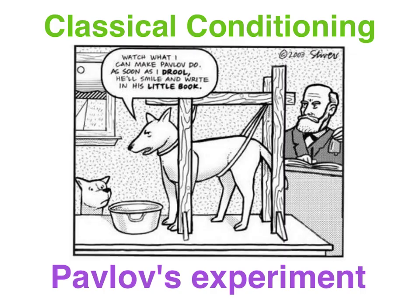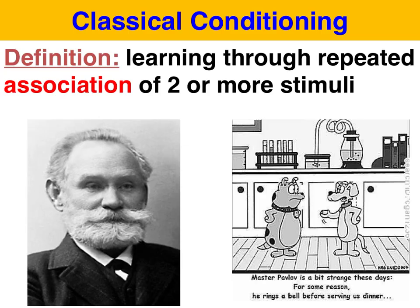Pavlov discovered classical conditioning by accident. He was doing research on the salivatory reflex when he noticed that the dog he was experimenting on was salivating prior to the food arriving — i.e., it had learnt to anticipate the food, for instance, when it sighted the lab technician. Hence, the origins of classical conditioning, which can be defined as learning through a repeated association of two previously unrelated stimuli.